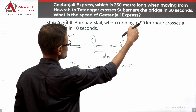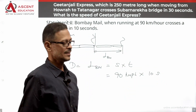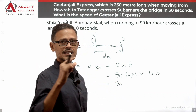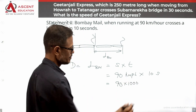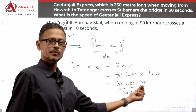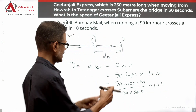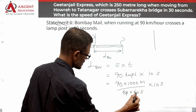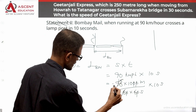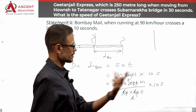The speed of Bombay Mail crossing the lamppost is 90 km per hour, and it crosses in 10 seconds. Converting 90 km per hour to meters per second: 90 km = 90,000 meters; 1 hour = 3,600 seconds. So 90,000 / 3,600 = 25 meters per second. Multiplying by 10 seconds: 25 × 10 = 250 meters. Therefore, the length of Bombay Mail is 250 meters.